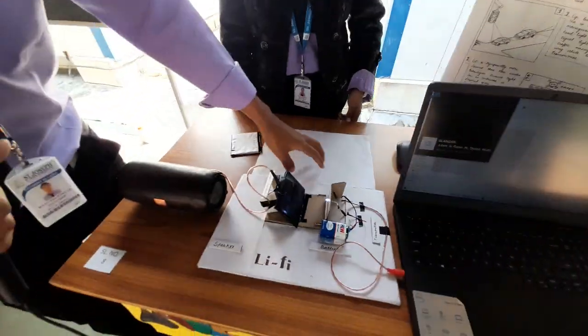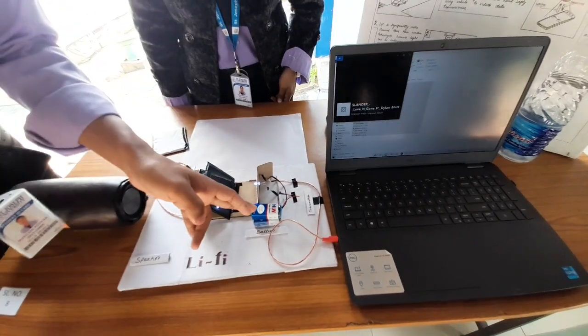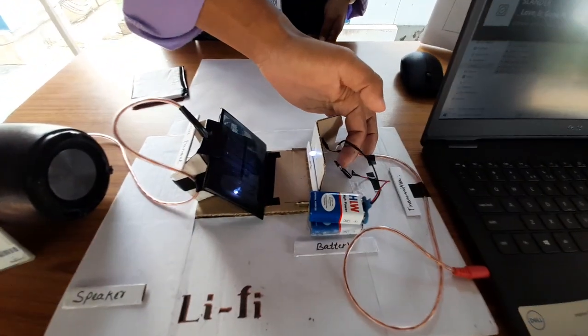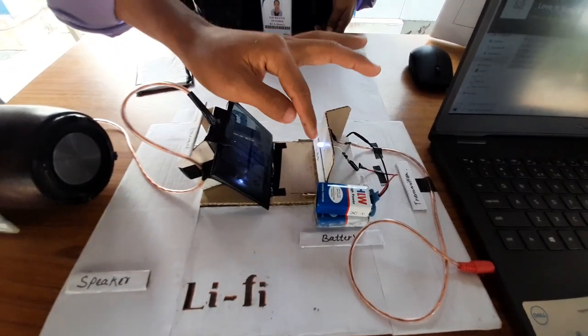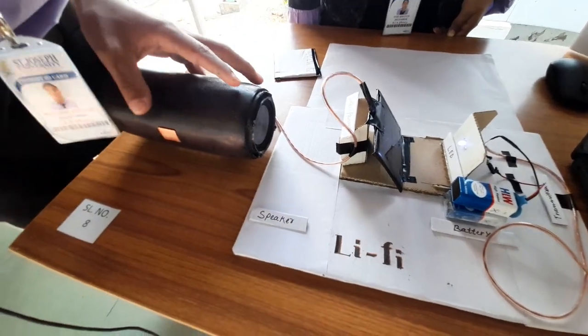We made it with simple materials like this aux cable, the 9-volt battery, 220 ohms resistor, LED light, photo detector which is a solar panel, and another end of this aux cable, a speaker.